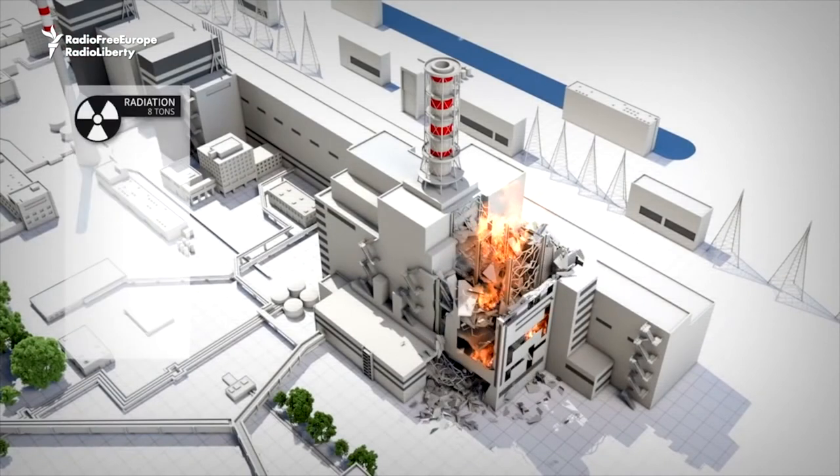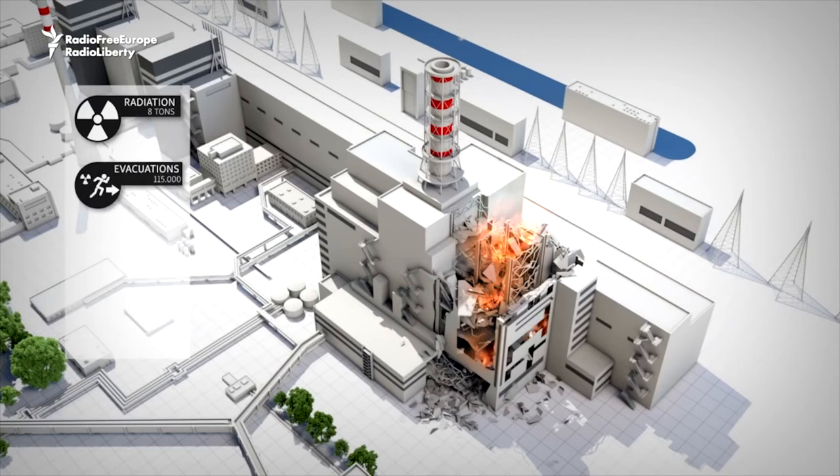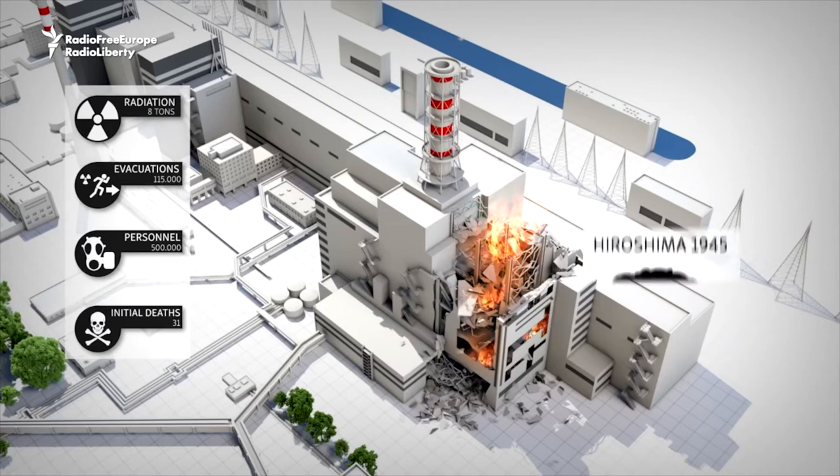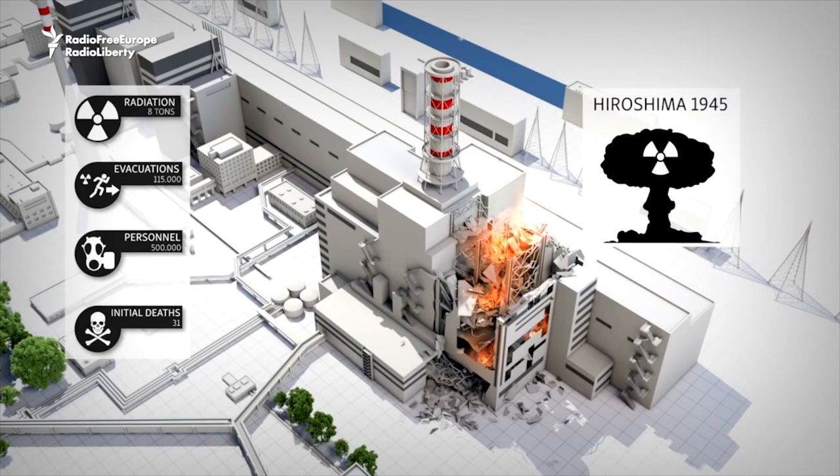The explosion released 8 tons of radioactive matter into the atmosphere. 115,000 people were evacuated from a 30-kilometer zone around the plant. 500,000 people were deployed for the accident and its aftermath, and the fire lasted for 15 days. 31 of the initial firefighters and plant workers were killed within days due to serious radiation. The toxicity of the radioactive clouds is the same as 400 times the Hiroshima atomic bomb explosion.